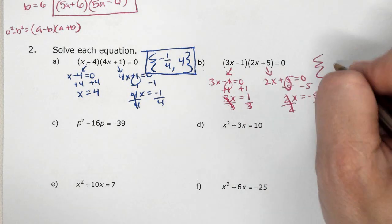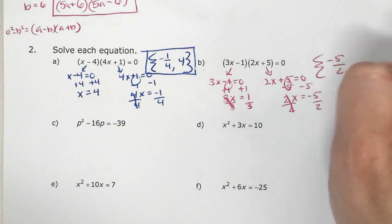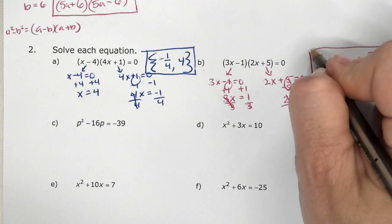So least to greatest, negative is smaller, negative five over two, comma, one-third. Whoops.